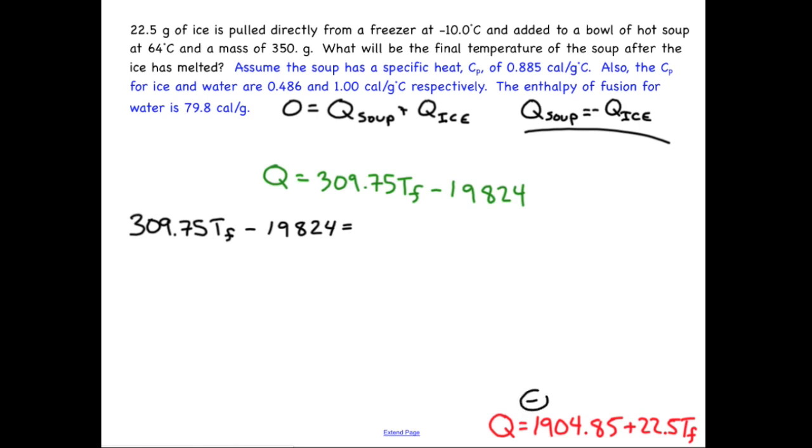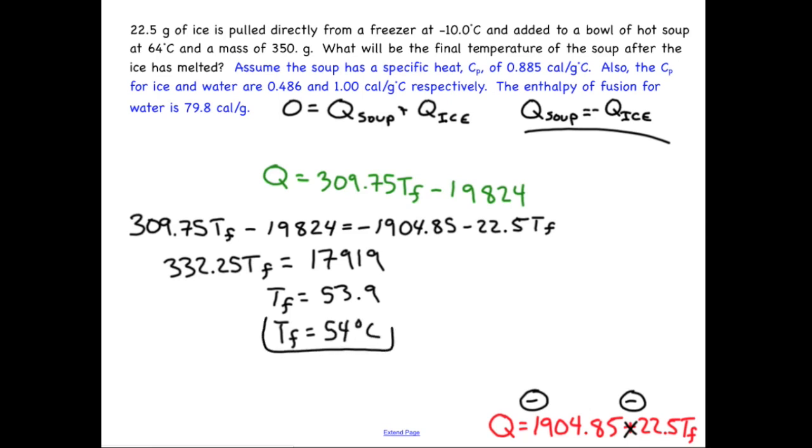Now I'm going to come in and I'm going to have this be a minus because it was a plus. And this is also going to be a minus now because it was a plus. Negative 1904.85 minus 22.5 T_F. Now I'm going to group like terms. My two terms that have a T in common would give me this, T final. And then my two terms that don't will give me this, 17919, rounding that a bit. I'll divide that 300 number over and I will find that T final is equal to, it's 53.9, but with my sig figs I probably ought to just leave it at 54 degrees Celsius. And that is my final number.